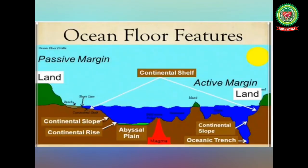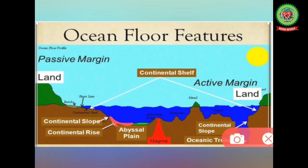The next division of the ocean floor is the continental rise. Beyond the continental slope is the continental rise — it is an area of gentle slope with generally low relief. With increasing depth, the continental rise merges with the abyssal plain.